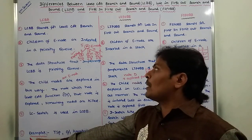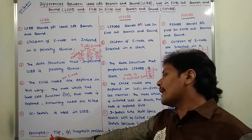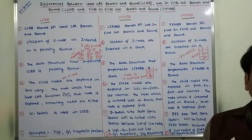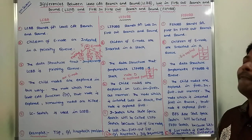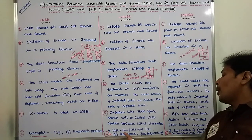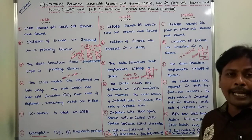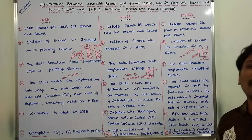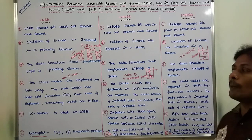Examples for least cost branch and bound are: traveling salesperson problem and 0/1 knapsack problem. Examples for LIFO branch and bound are: 0/1 knapsack problem and job sequencing with deadlines problem. Examples for FIFO branch and bound are: 0/1 knapsack problem and job sequencing with deadlines problem.